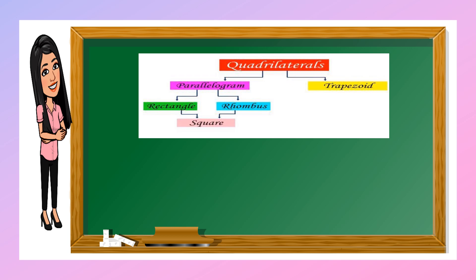This time, let us discuss quadrilaterals. Quadrilaterals are divided into two: parallelogram and trapezoid. Under parallelogram, we have rectangle, rhombus, and square. Under trapezoid, it is only one.